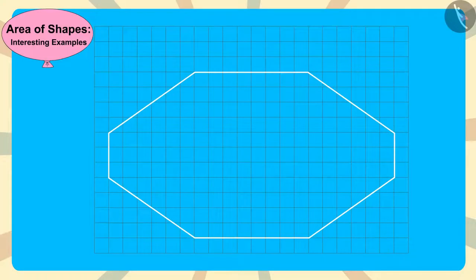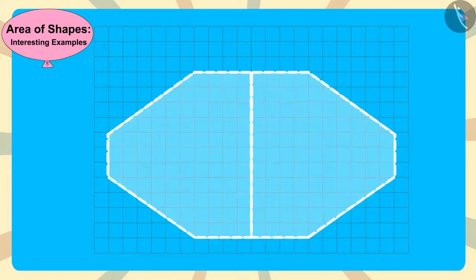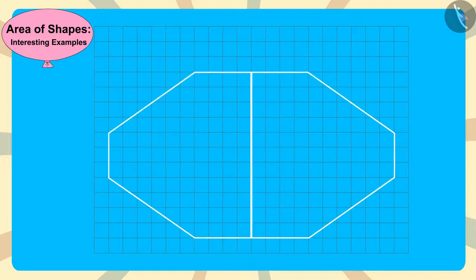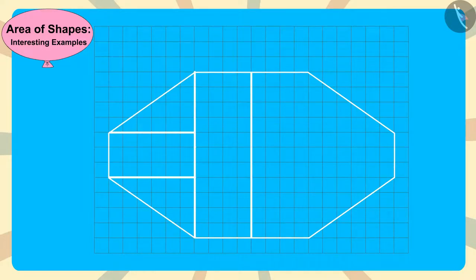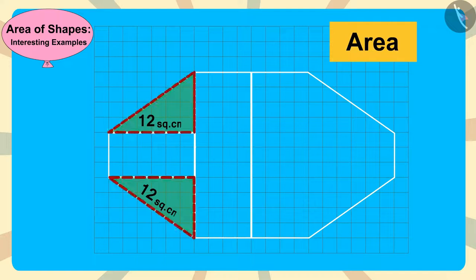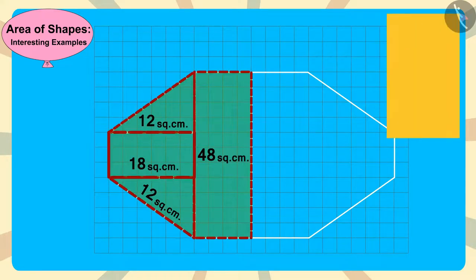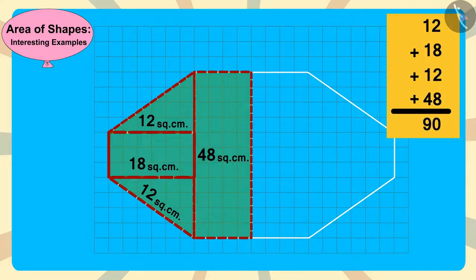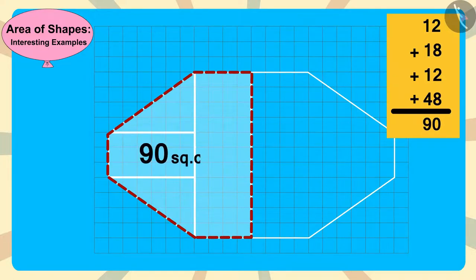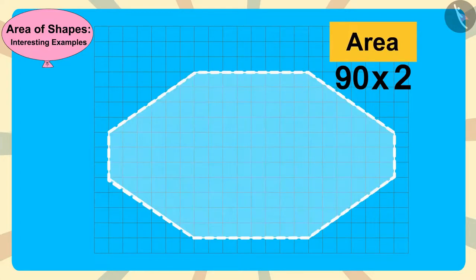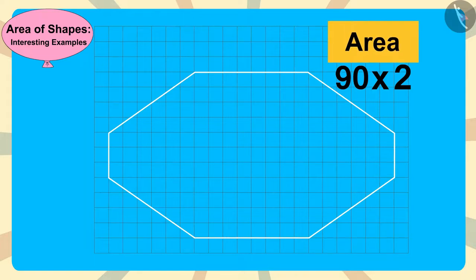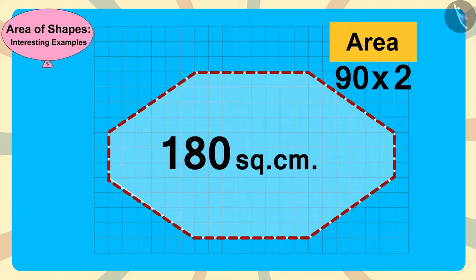We can divide this diamond's outline into equal parts. Then this part of the diamond can be divided into triangles and rectangles. All we have to do is find the area of these triangles and rectangles. We can add the areas of these shapes and find the area of this part of the diamond as 90 square centimeters. Then we multiply 90 by 2 to find the area of the entire diamond, which is 180 square centimeters.